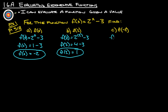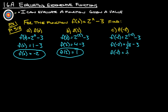And then f of negative 2. So f of negative 2 equals 2 to the negative second power minus 3. 2 to the negative second is the same as 1 over 2 to the second minus 3. So f of negative 2 is 1 fourth minus 3, which gives us negative 2 and 3 fourths.